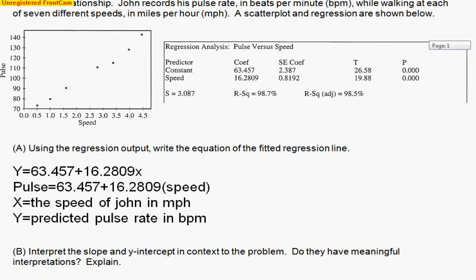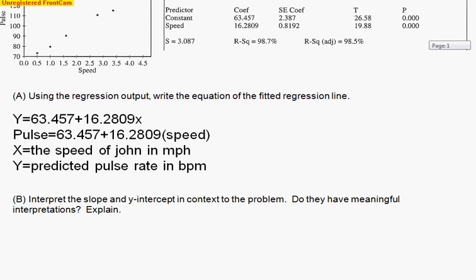Now the next question is, interpret the slope and the y-intercept in context. Let's start off with the slope. The slope is 16.2819. I like to usually write that with a 1 underneath it. That way I remember that this says, for every 1 mile per hour John's speed increases -